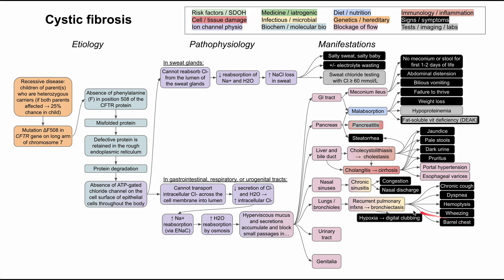These respiratory problems can make the patient hypoxic, and when you have chronic hypoxia, this can result in digital clubbing — thickening of the fingers related to hypoxia — which can also happen in cystic fibrosis.